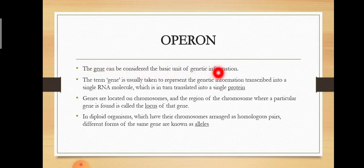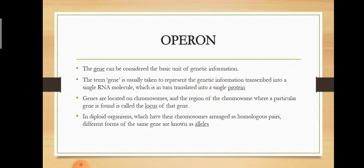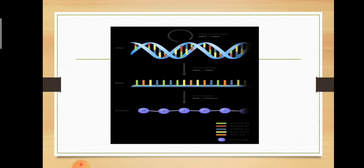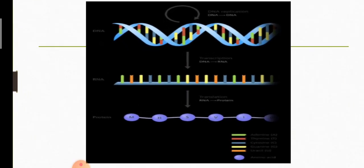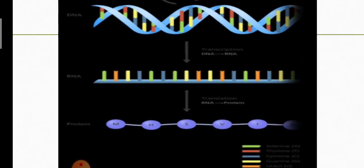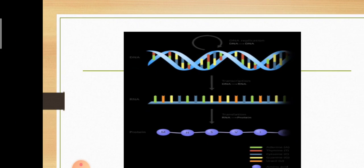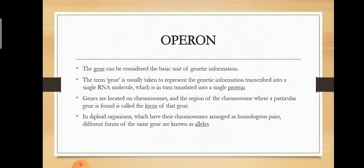The gene can be considered the basic unit of genetic information. The term gene is usually taken to represent genetic information transcribed into a single RNA molecule, which is in turn translated into a single protein. The central dogma of life is the conversion of DNA to RNA and RNA to protein — DNA is transcribed into RNA and then RNA is translated into protein. The gene is considered as a basic unit of genetic information.